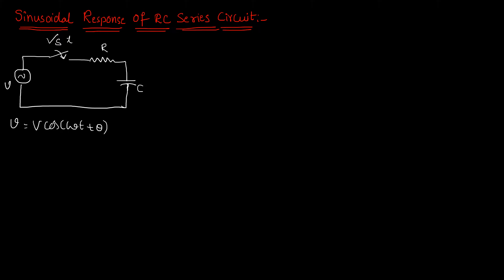The switch will be closed at t = 0, and we have to imagine that the capacitor was initially uncharged. That means voltage across the capacitor is 0. Whenever you close the switch then we can get a closed path, and there you can get the loop current I. This current I is I(t), it is a function of time t. So instead of I(t) I am writing I — please make a note of it.